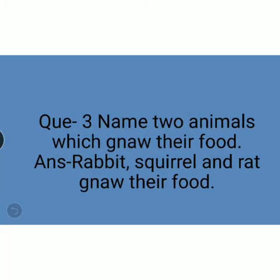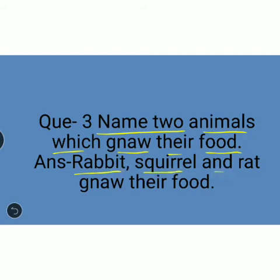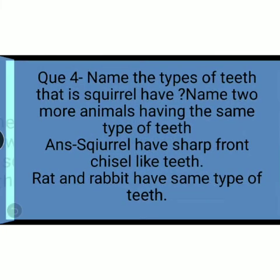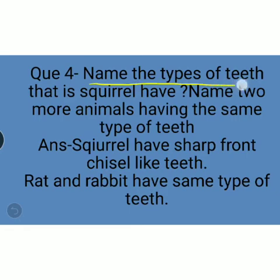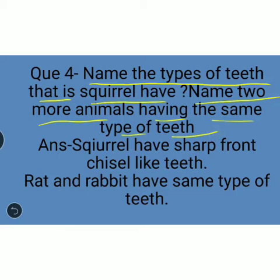Question: Name two animals which gnaw their food. Answer: Rabbit, squirrel, and rat gnaw their food. Next question: Name the type of teeth that squirrel has, and name two more animals having the same type of teeth. Answer: Squirrel has sharp front chisel-like teeth. Rat and rabbit have the same type of teeth.